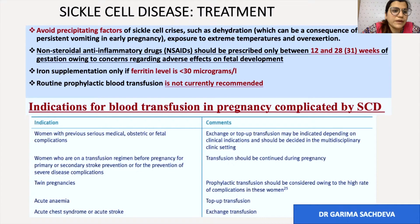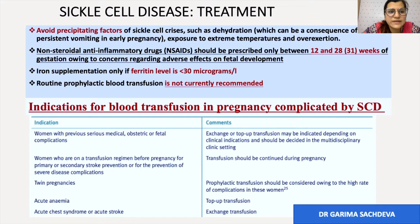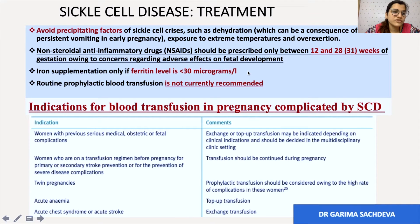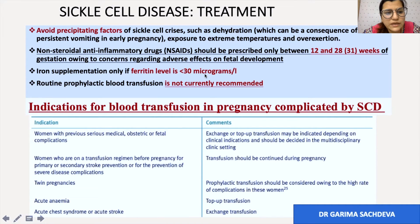For treatment of sickle cell disease in pregnancy, avoid precipitating factors like dehydration, exposure to extreme temperatures, and overexertion. For painful crisis, NSAIDs can be given only between 12 to 28 weeks — the recent guideline states 31 weeks while GTG states 28 weeks of gestation. Iron supplementation should only be given if iron deficiency is demonstrated by a low ferritin level of less than 30 micrograms per litre.